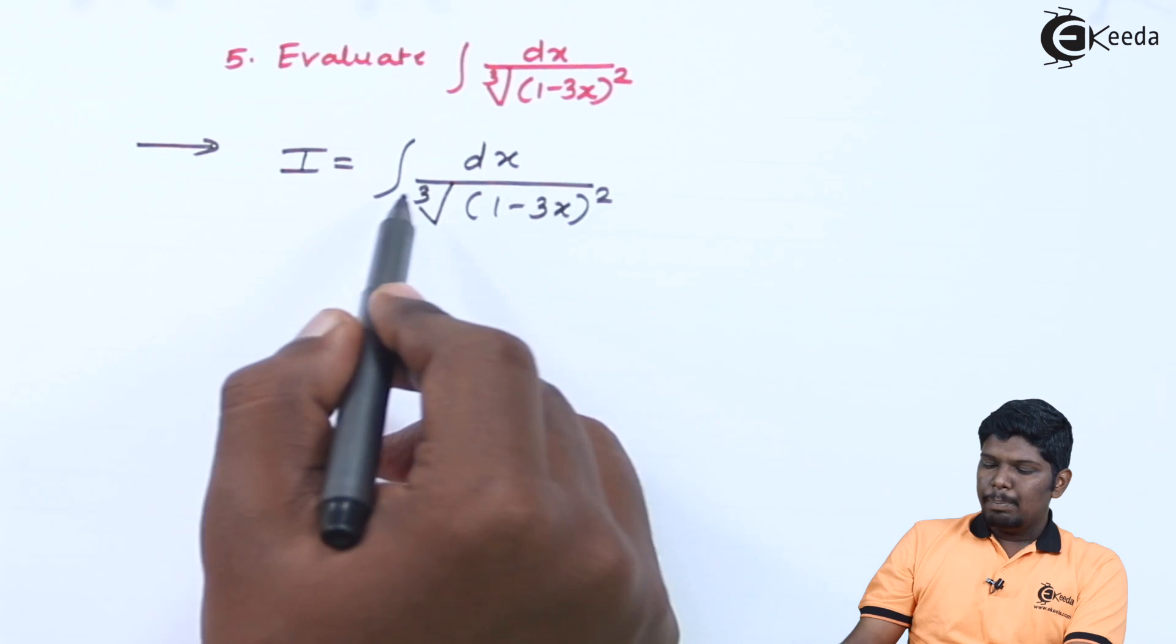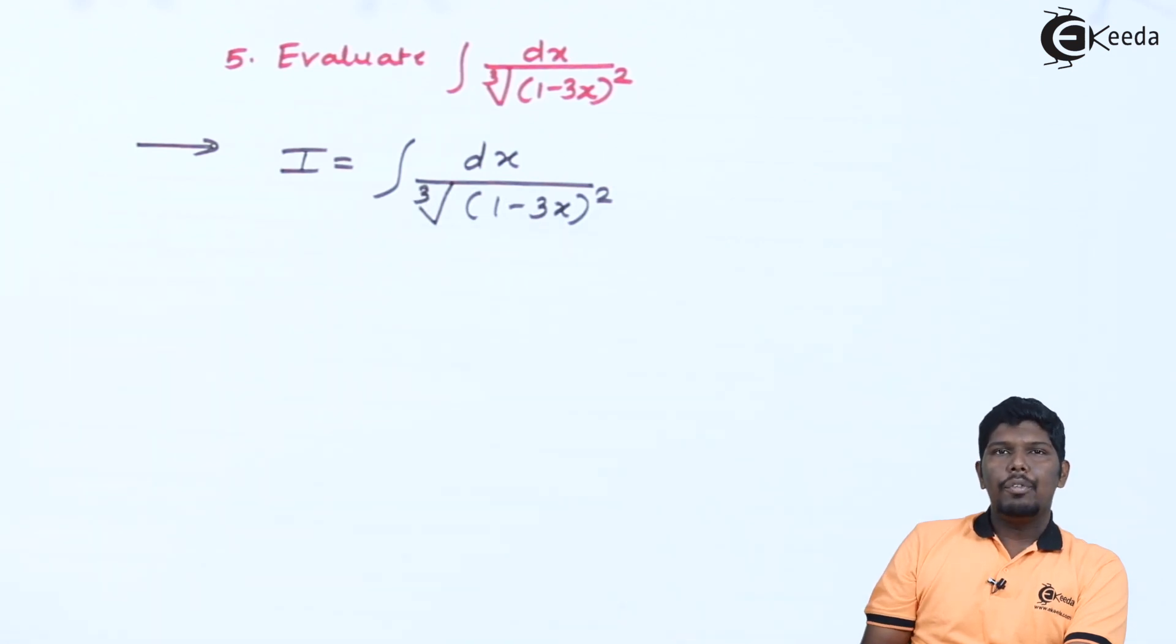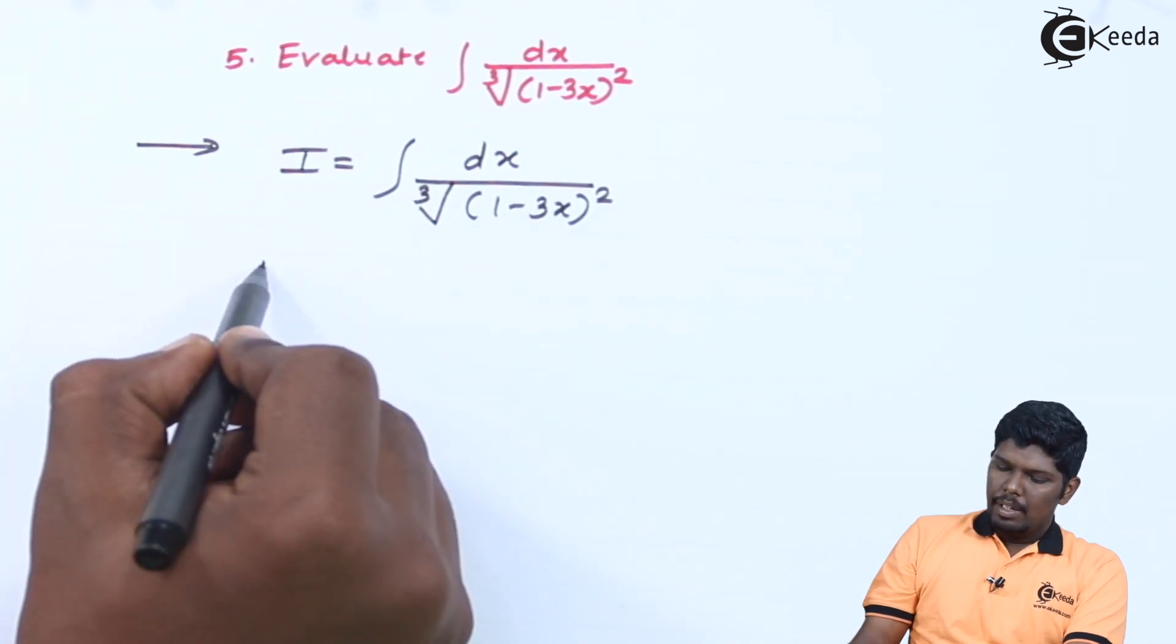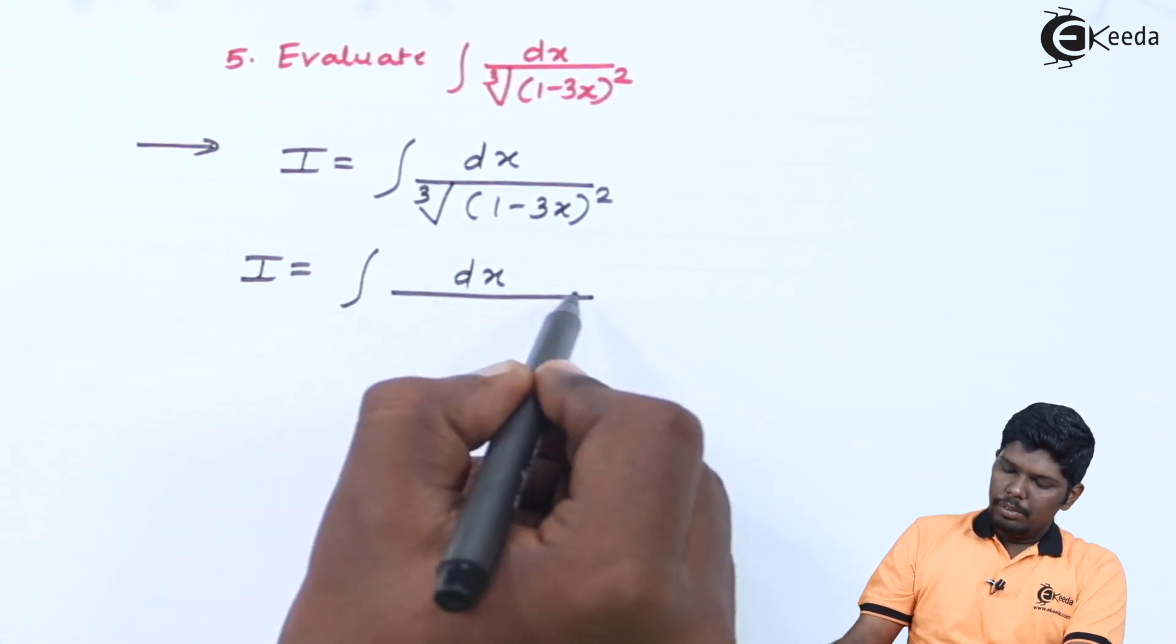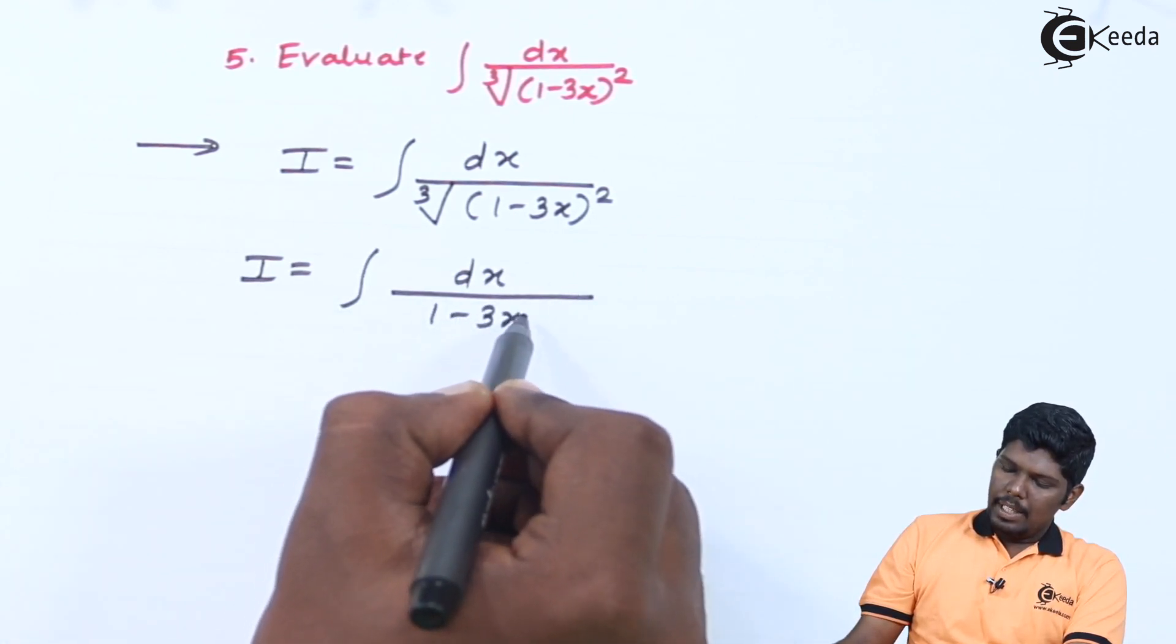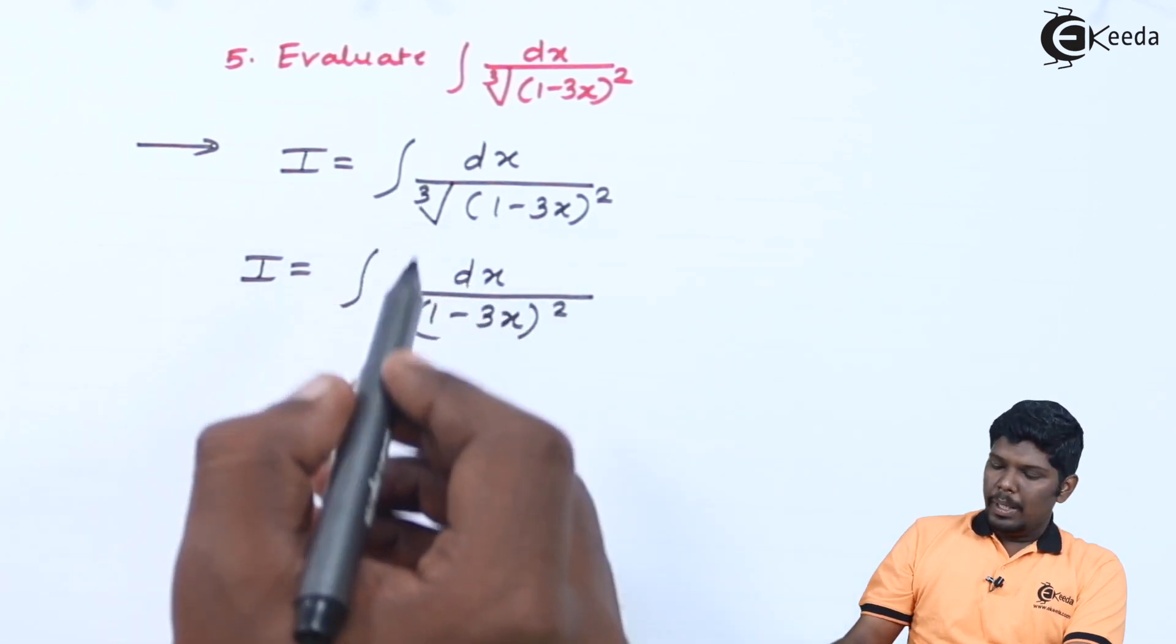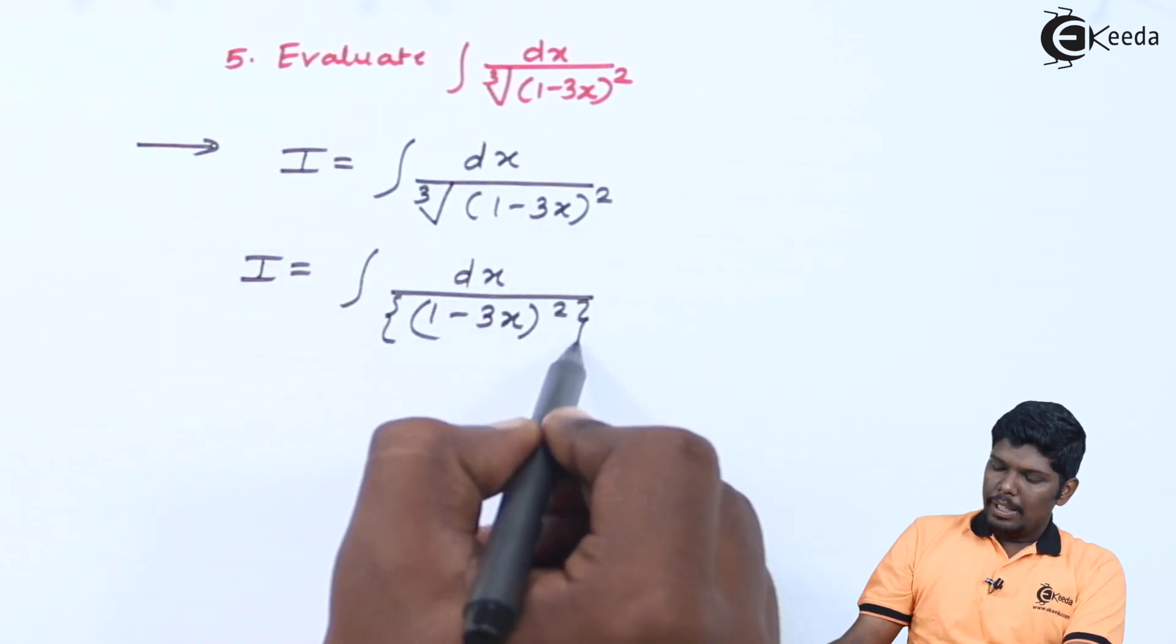For that we can convert this power or cube root in terms of fraction. That will give you dx upon (1 minus 3x) the whole square. Cube root means raise to 1 by 3.